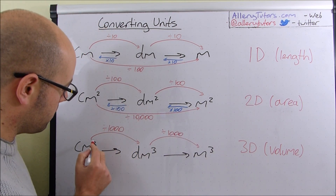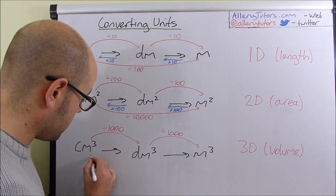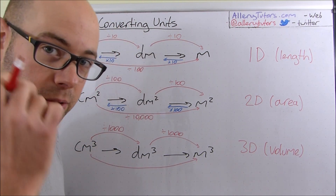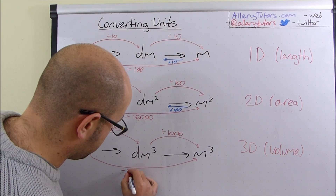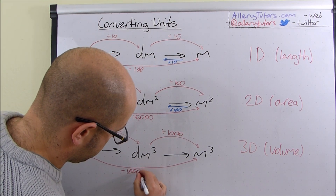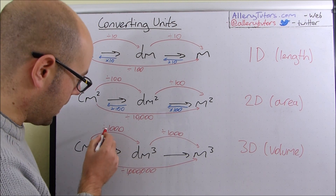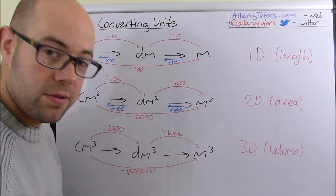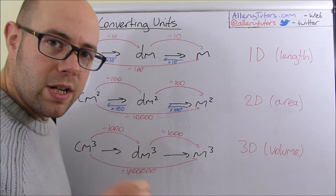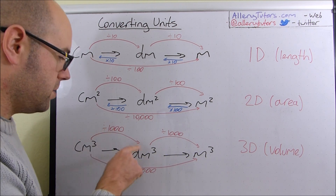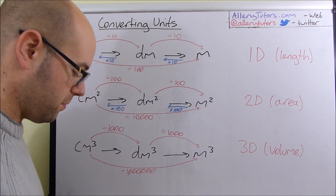If we're going from centimetres cubed all the way to metres cubed — for example when using the ideal gas equation — you effectively have to divide by a million to convert centimetres cubed into metres cubed. We add that zero and that zero and we get to a million, so we've got six zeros in total. This is really important because it's very often that you have to convert centimetres cubed into decimetres cubed, especially in titrations. To do that, you divide by 1,000 — and that's why we put that there.